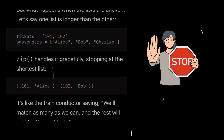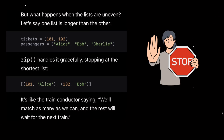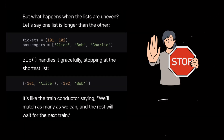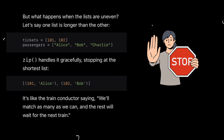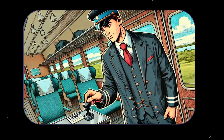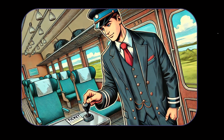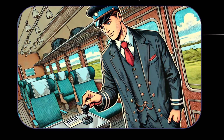But what happens when the lists are uneven — when one list is longer than the other? tickets = [101, 102] and passengers = ['Alice', 'Bob', 'Charlie']. Zip handles it gracefully, stopping at the shortest list: (101, 'Alice'), (102, 'Bob'). It's like the train conductor saying, 'We'll match as many as we can, and the rest will wait for the next train.'